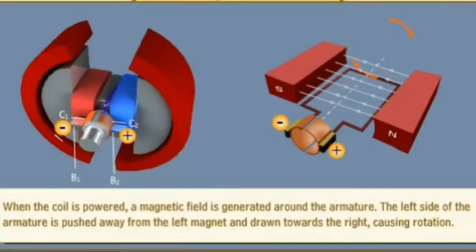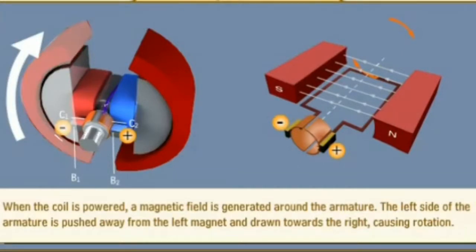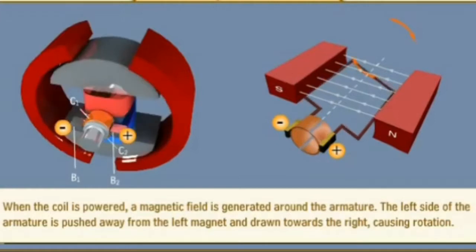When the coil is powered, a magnetic field is generated around the armature. The left side of the armature is pushed away from the left magnet and drawn towards the right, causing rotation.